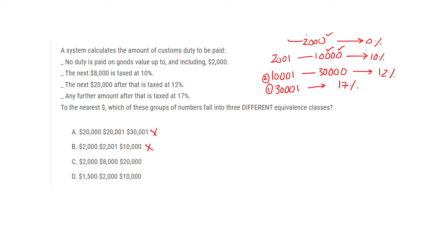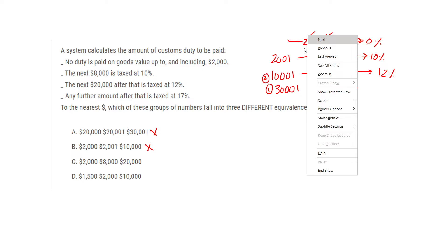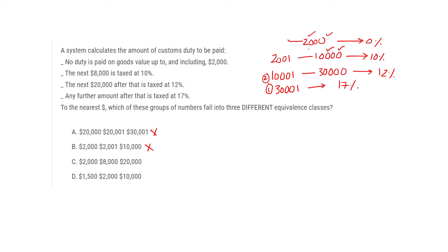For option C: 2,000 is in the first class, 8,000 is in the second class, and 20,000 is in the third class — so 1, 2, 3: three different classes. C is the correct answer.